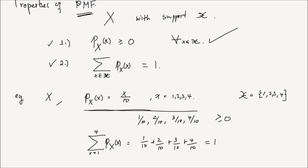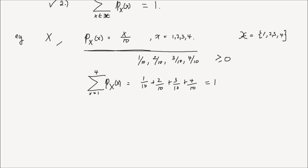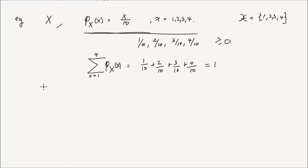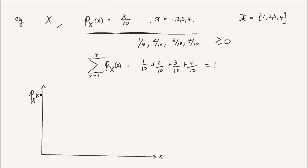Let's plot the PMF of this random variable. Let's say that's the vertical axis and we have the horizontal axis x, and here we have the PMF. x could take a value of 1, 2, 3, or 4. Let's say this is 0.2, 0.4, 0.6, 0.8, 1. So when x equals 1, the PMF is 1 over 10, or 0.1.